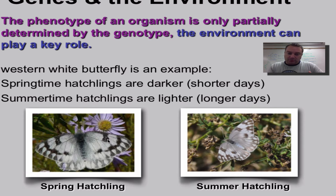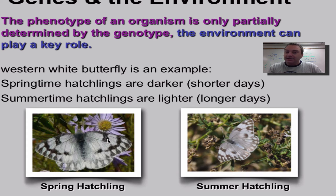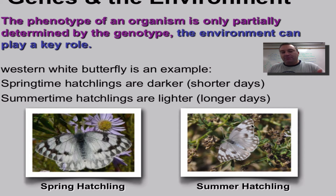The reason those darker spots are there is because black is going to absorb more of the sun's energy, and that helps dry out the wings. In the summertime the days are longer, the temperatures are higher, and it's a little bit easier for those wings to dry out on their own. As you can see in this picture, the wing colors are more of a brown, because it doesn't have to absorb that extra energy from the sun — it's plenty warm out for the wings to dry.